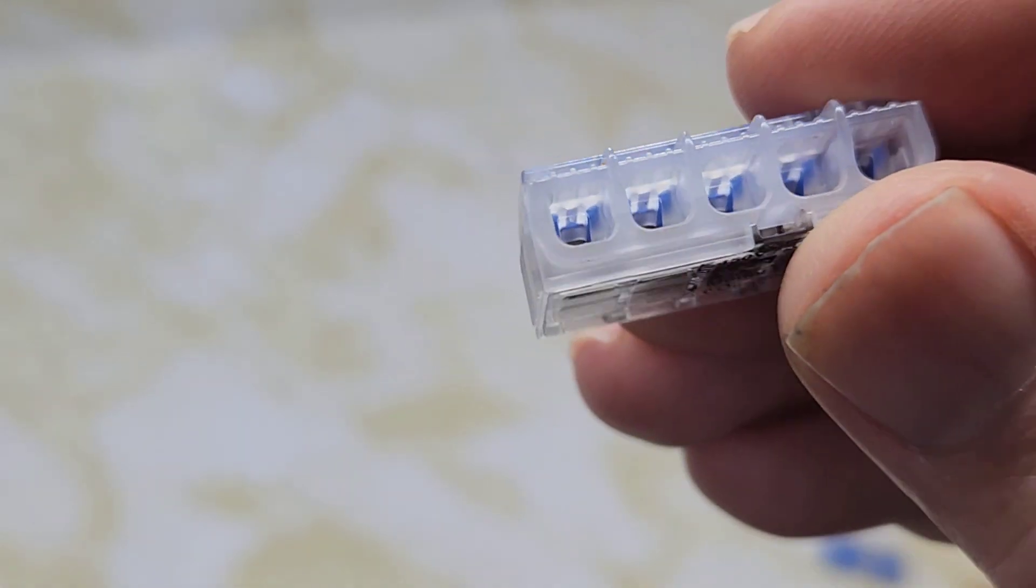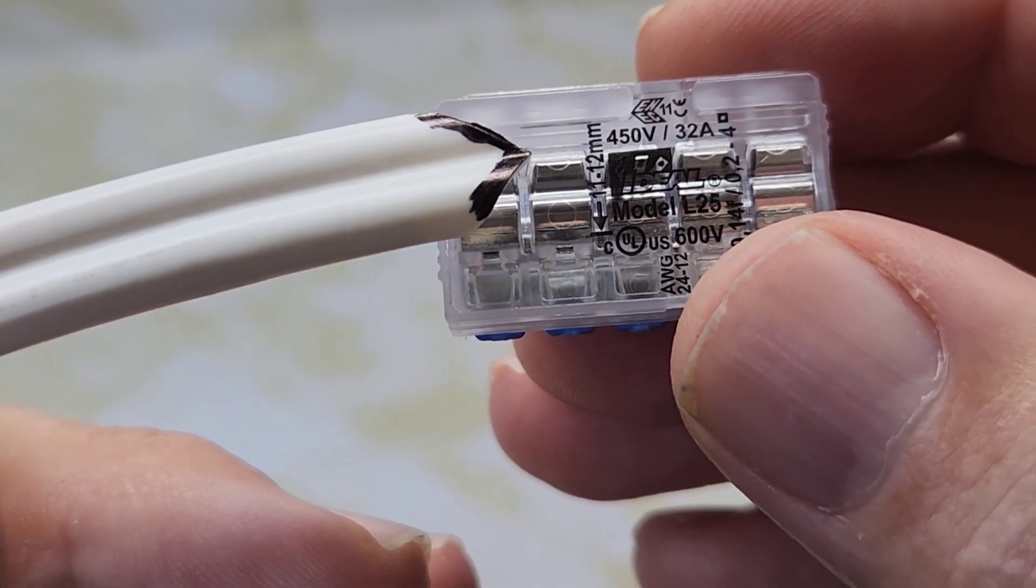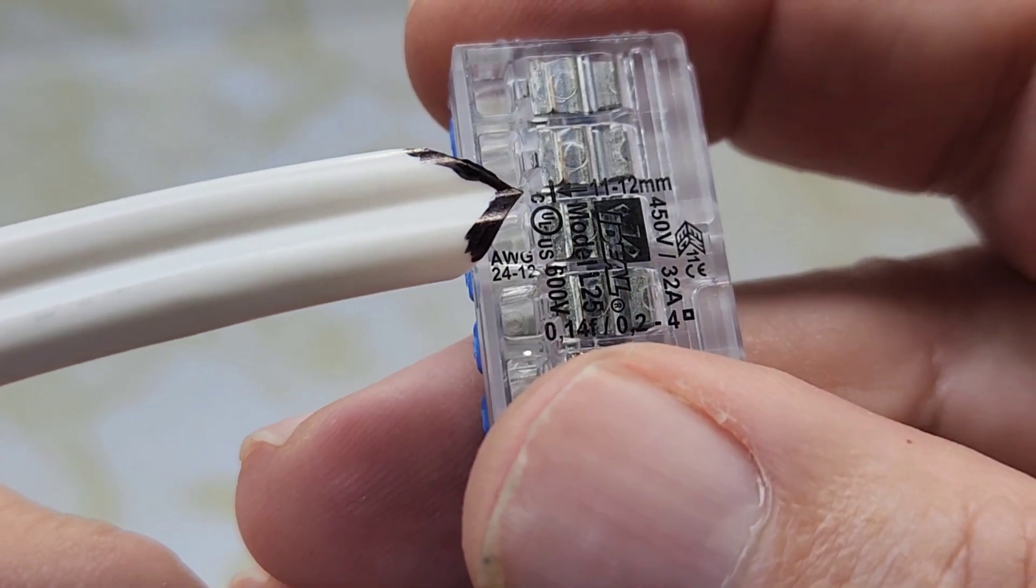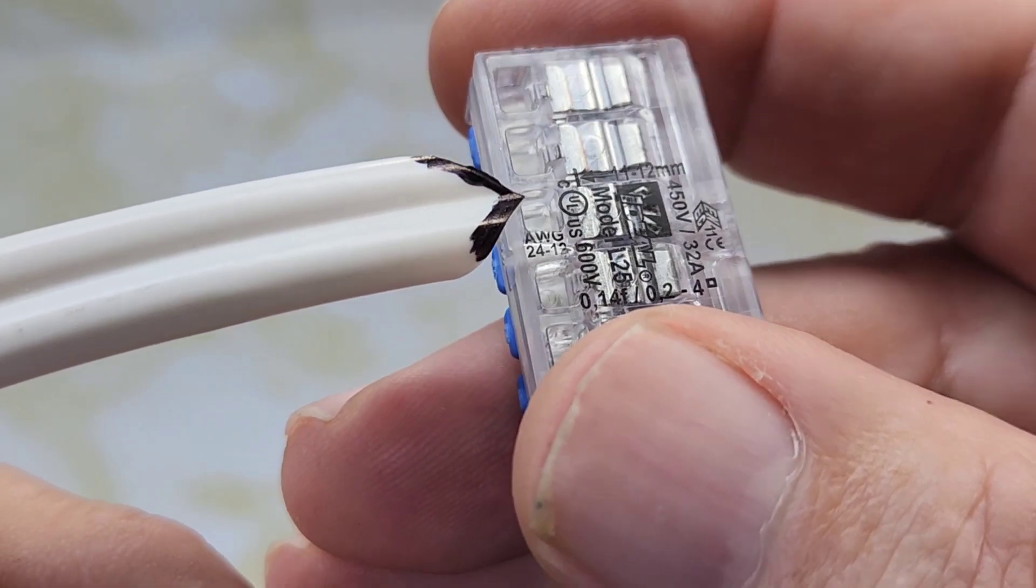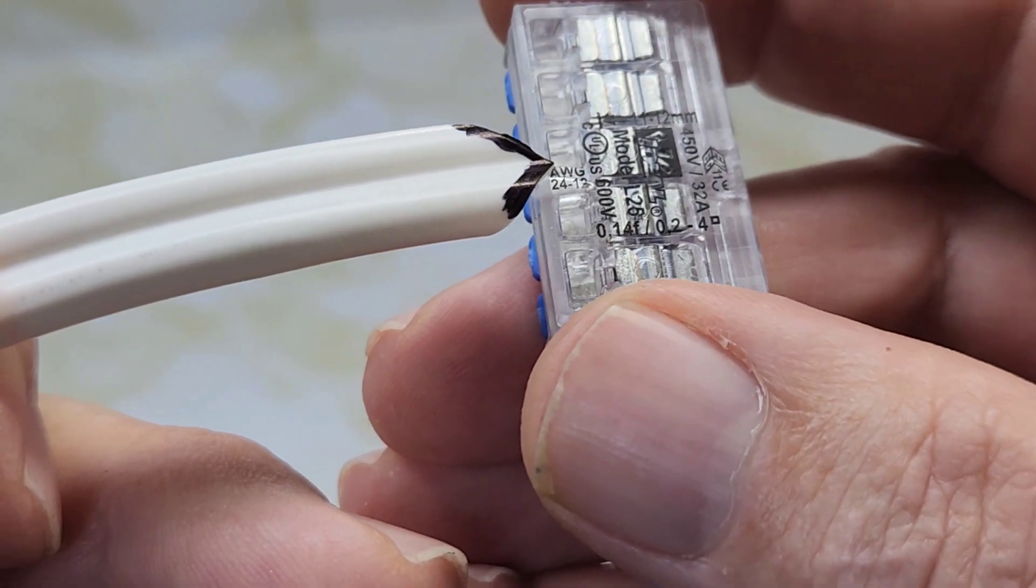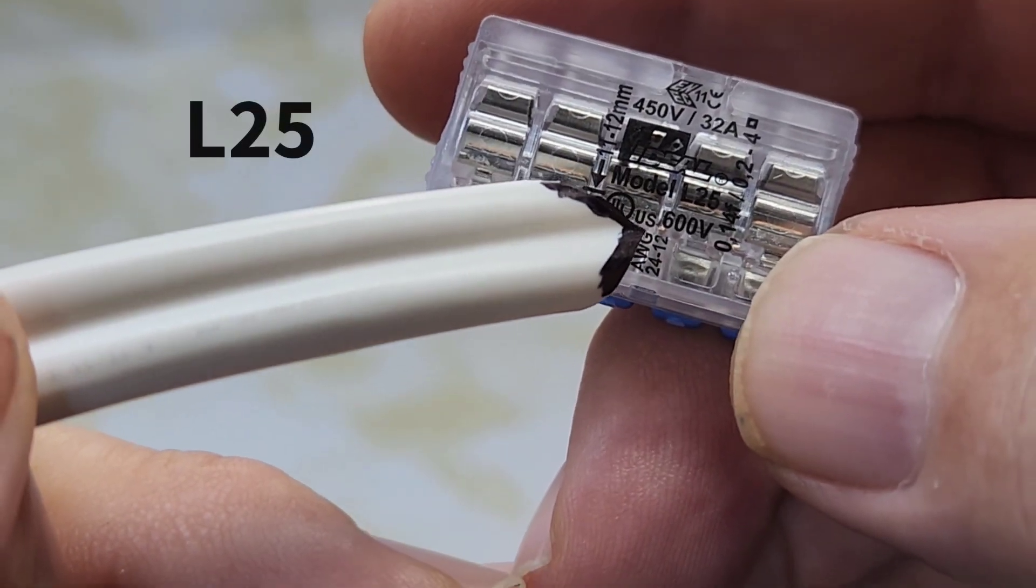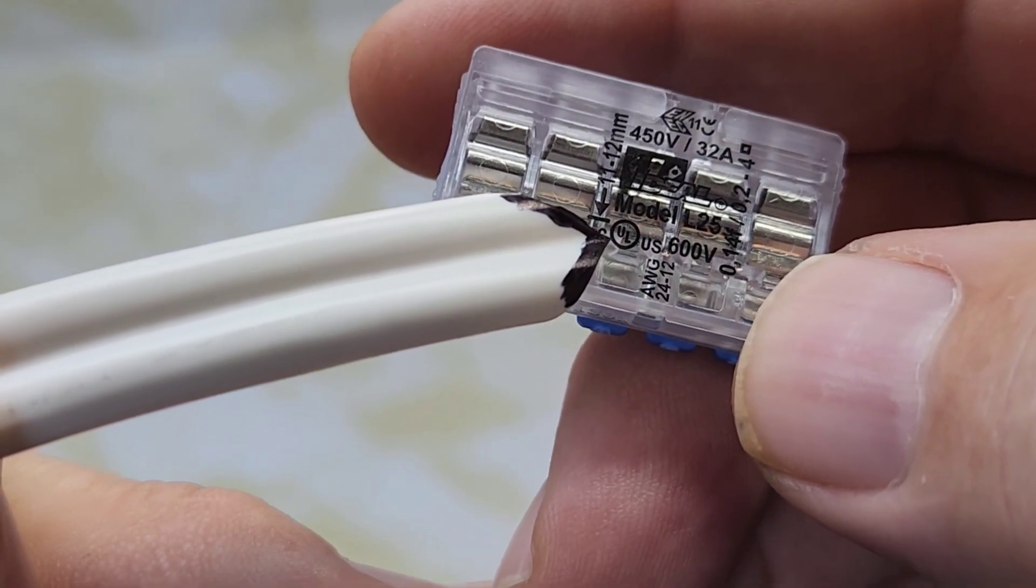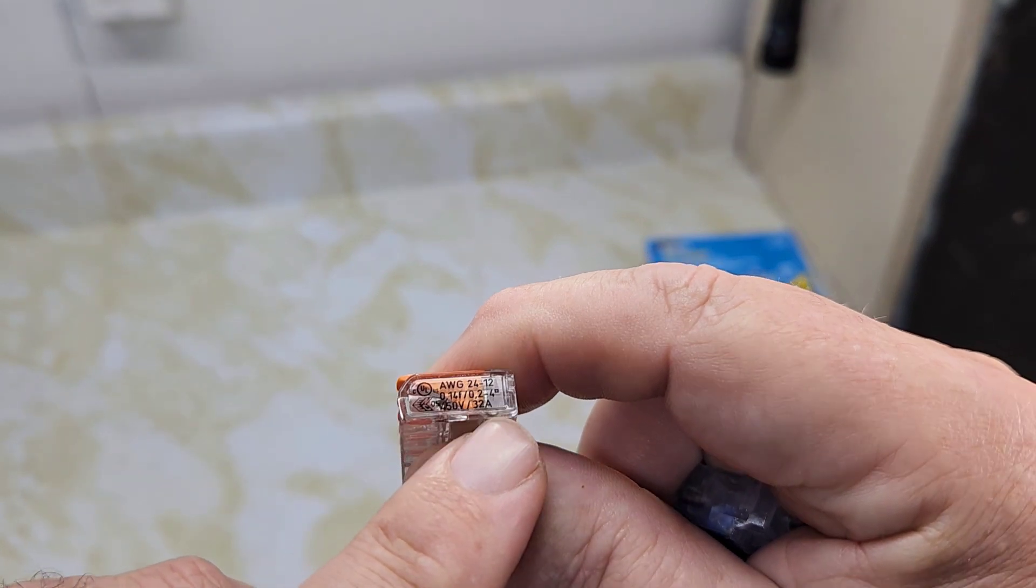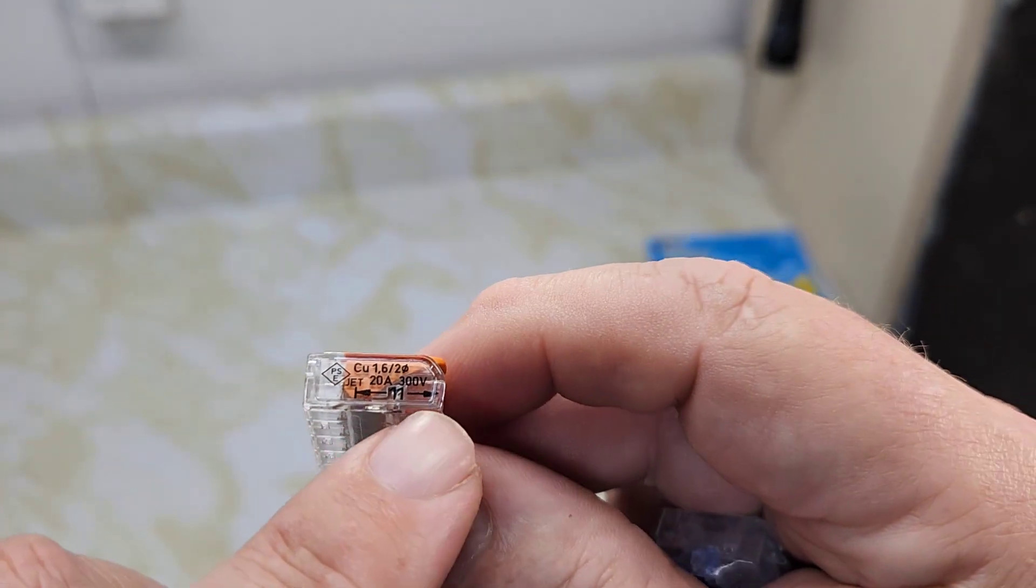Five port connector from Ideal. Lots of information on the back of the connector here. Right near the top, it's got 450 volts, 32 amps, and on this side it's got when you cut the wire, 11 to 12 millimeters inside this connector. It's got AWG 24 to 12 - that's solid and stranded wire. It's got the model number here, L25. The five part Wago one has that same information - AWG 24 to 12, 450 volts, 32 amps, and on the back it says they want 11 millimeter.